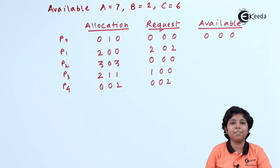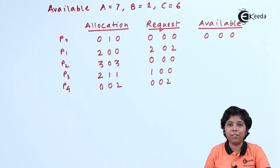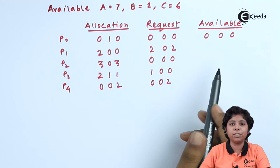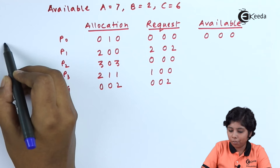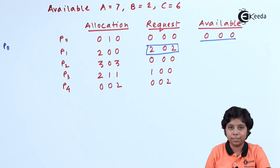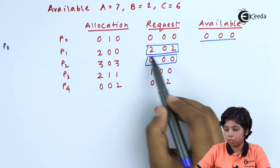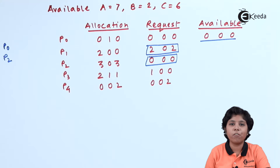Now we will solve a problem and see if the system is in a safe state. At time instance T0, there are 5 processes P0 to P4. P0 arrives first needing 000 in the available matrix, which is satisfied, so P0 is put in the safe sequence. P1 needs 2,0,2 but only 000 is available, so no resources can be allocated to P1. P2 requests 000 and available is 000, so P2 is added to the safe sequence and its allocation is added to available.